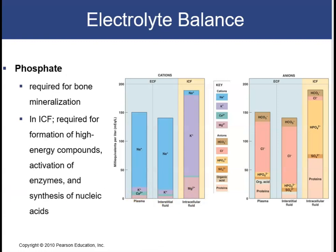Next is phosphate, seen in the ICF. Phosphate is required for bone mineralization. In the ICF, it is required for the formation of high-energy compounds, for the activation of enzymes, and for the synthesis of nucleic acids. Since the ICF is where the cell makes ATP and nucleic acids, it makes sense that phosphates would be very high there.